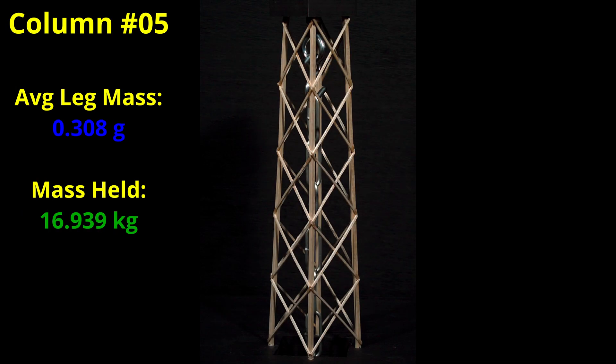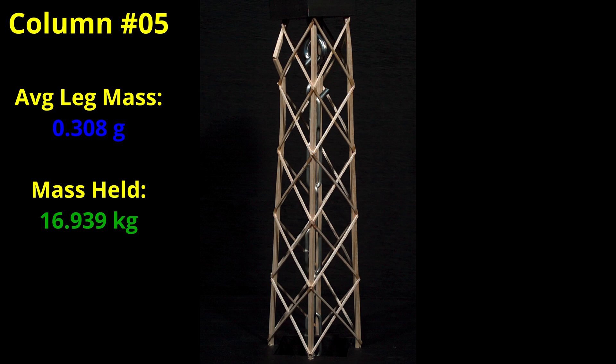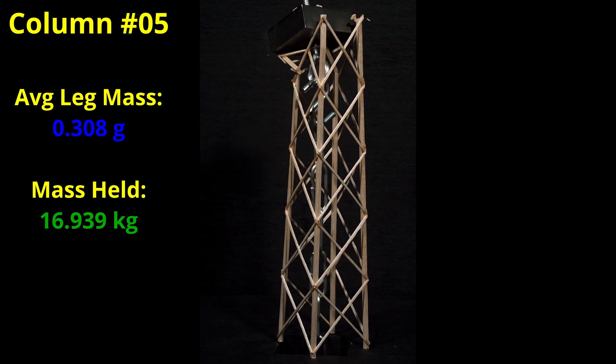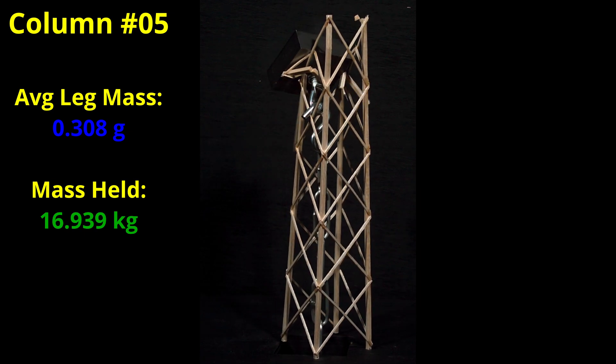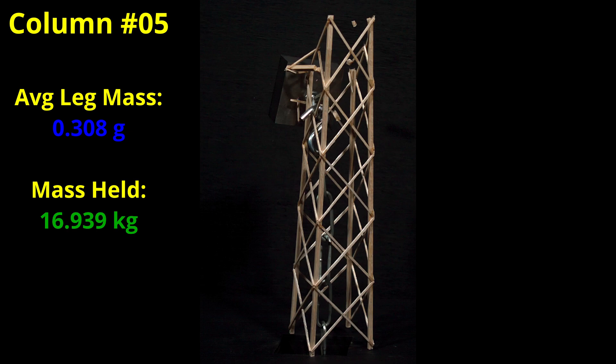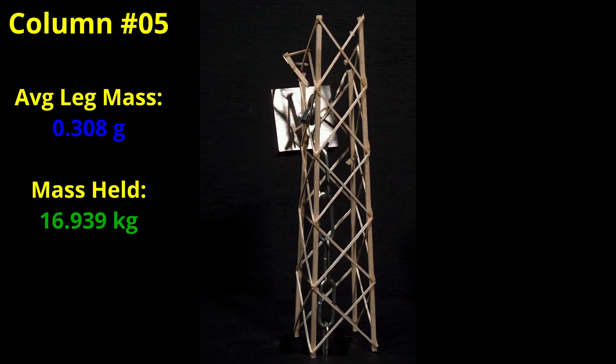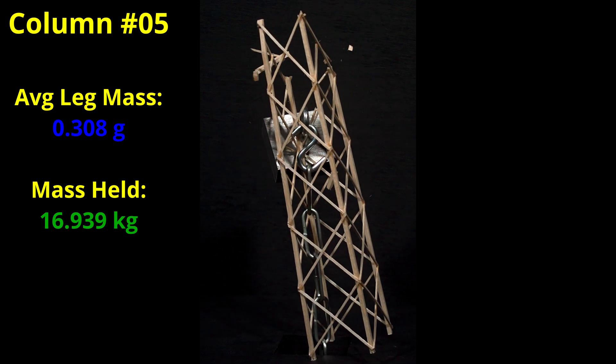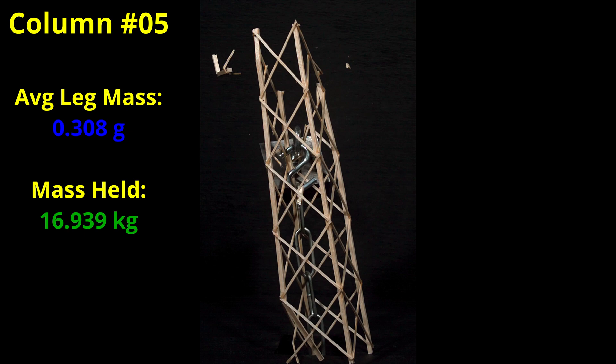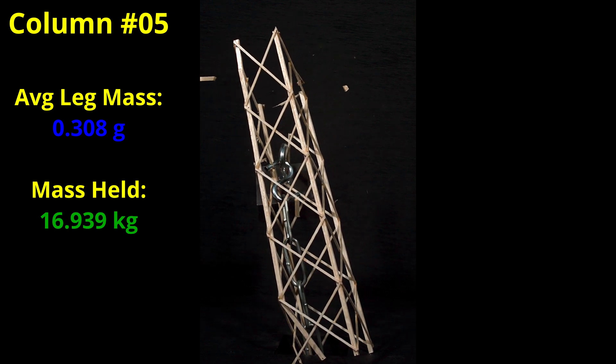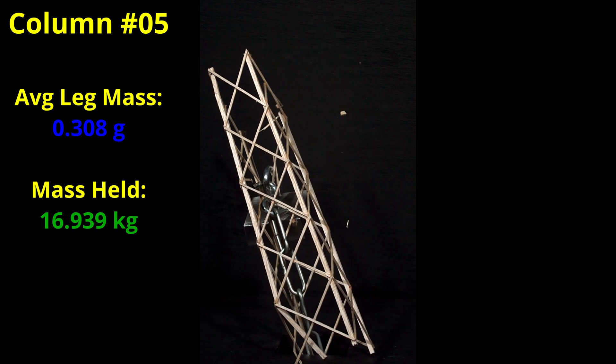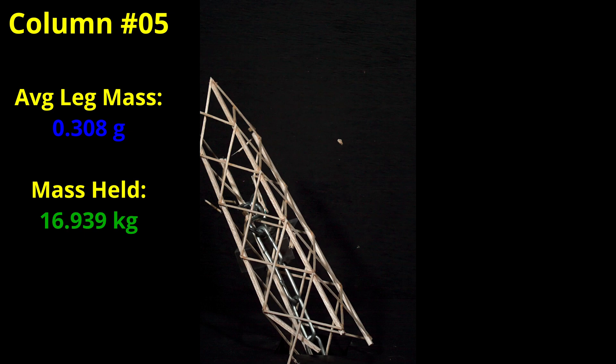The next build used an average leg mass of 0.308 grams or almost 17% more than the column that just held over 17 kilograms. Again we get a nice leg break but we also see an inconsistent result where this column only held 16.939 kilograms. Still well above the 15 kilograms but not more than the 17 kilograms of the previous build.